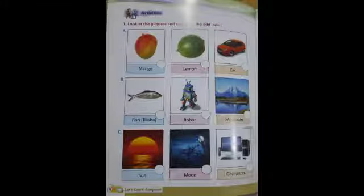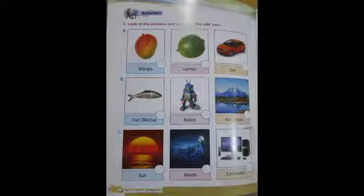Now children, open your computer book page number eight and give today's classwork and date. Read question number one: look at the pictures and cross the odd one. You know that mango is a fruit, lemon is a fruit, but car is not a fruit because we cannot eat car. It is a machine. That means car is the odd one out, so keep cross here.